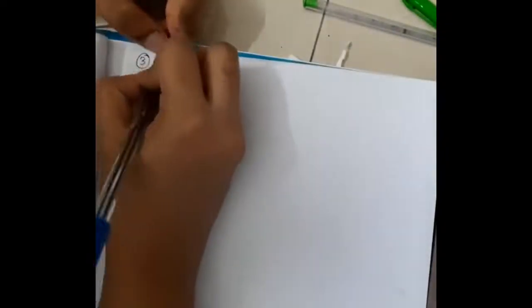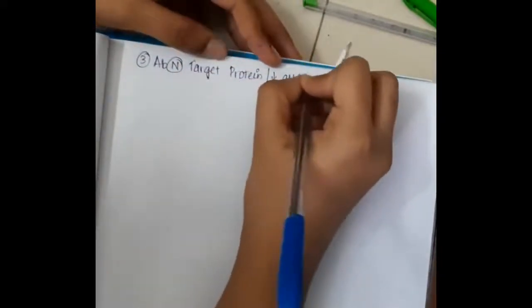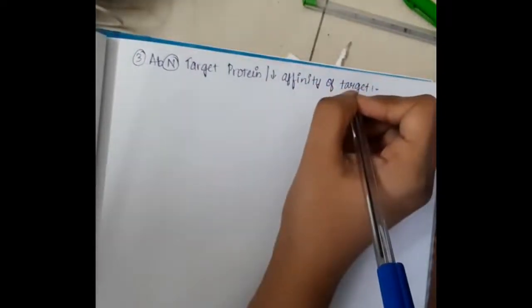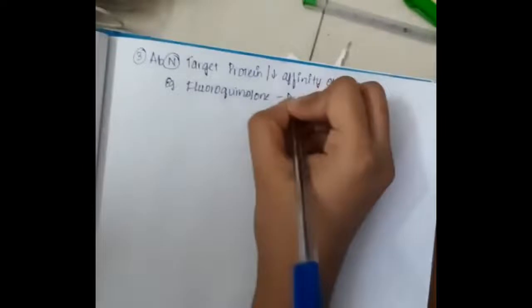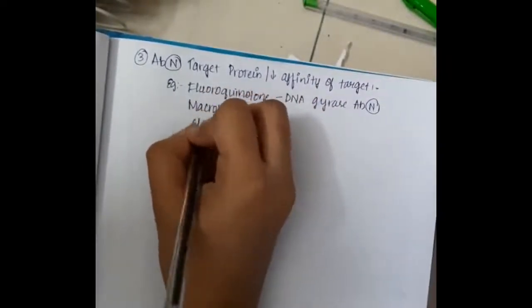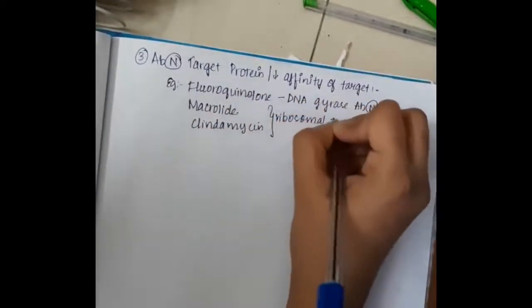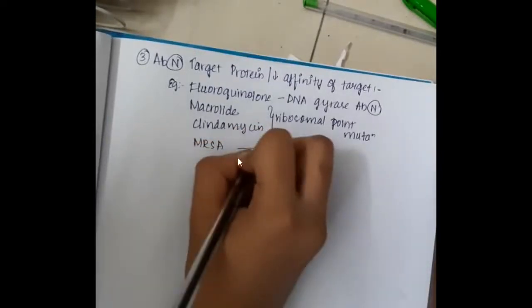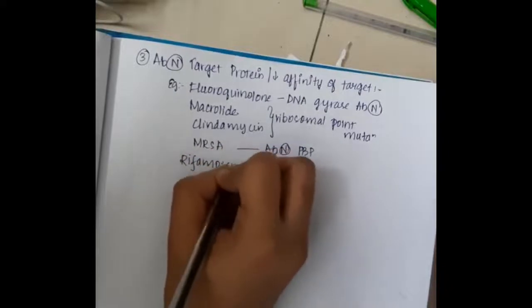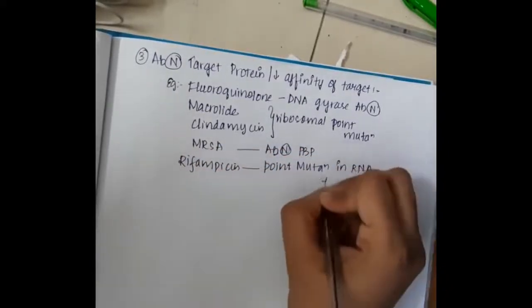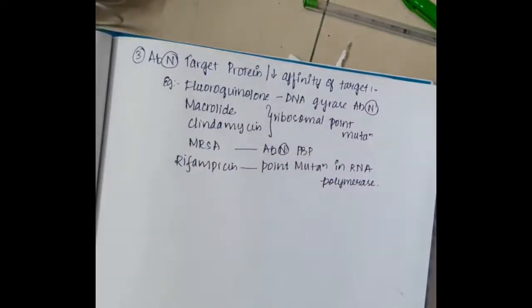The third important cause is abnormal target protein, or decreased affinity of the target. For example, fluoroquinolones cause DNA gyrase abnormality. Macrolides and clindamycin both cause ribosomal point mutation — because these drugs act on the ribosomes, resistance develops. MRSA develops resistance by abnormal penicillin binding protein, whereas resistance to rifampicin is developed by a point mutation in RNA polymerase. When we alter the target protein on which the drugs act, resistance is developed.